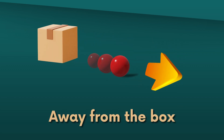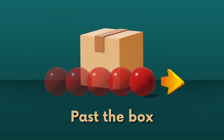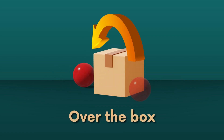The preposition 'away from' indicates movement in the opposite direction or getting further away from an object or location. For example, 'the ball rolls away from the box.' The preposition 'past' indicates movement or going beyond a specific object or location. For example, 'the ball rolls past the box.' The preposition 'over' indicates movement across or crossing a specific object or location. For example, 'the ball jumps over the box.'